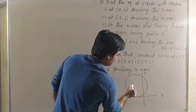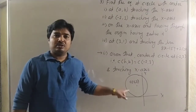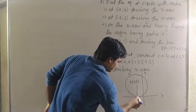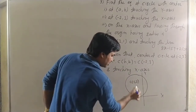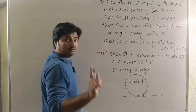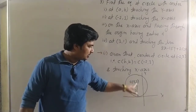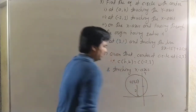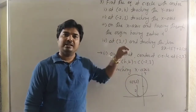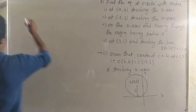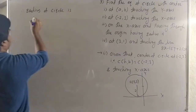The circle touches the x-axis, so x-axis is a tangent to the circle. The radius at the tangent point is perpendicular to the tangent. The center is at (-2, 3), so the y-coordinate is 3. The distance from center (-2, 3) down to the x-axis is 3. Therefore the radius is r = 3.